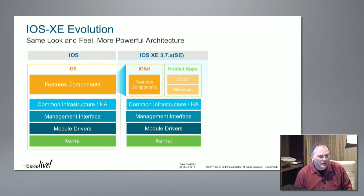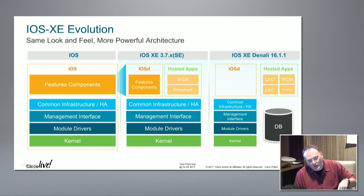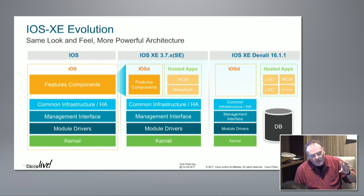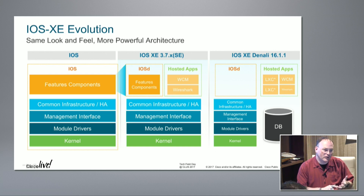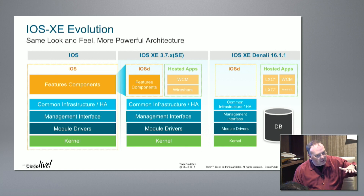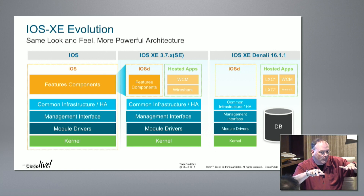We started this evolution with iOS 6E and continued it with iOS 16. One of the key things we've delivered in iOS 16 is two elements: the ability to containerize applications alongside iOS. This becomes really important when we start thinking about running security functions and other functions elsewhere in the network.